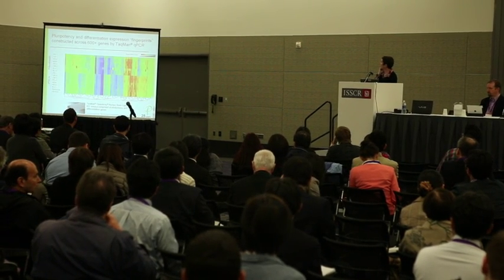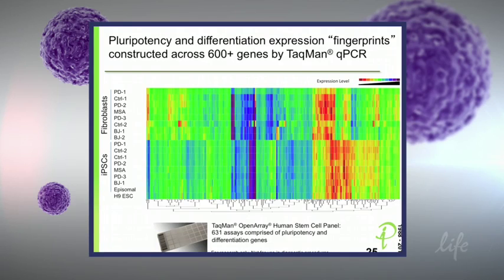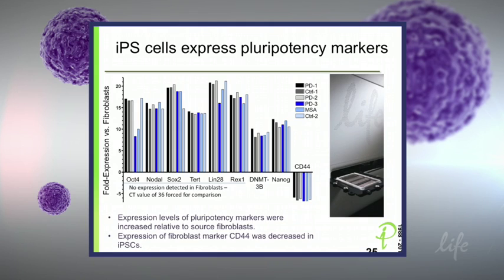We used a 609-gene panel from Life Technologies looking at pluripotency and differentiation genes based on guidelines from the stem cell initiative. We've seen that all the IPS cells clustered nicely together, and the original fibroblasts clustered together as well. The fibroblasts show a more heterogeneous pattern of expression, whereas the iPSCs are a lot more homogeneous. Across the lines, the pluripotency markers express fairly consistently.